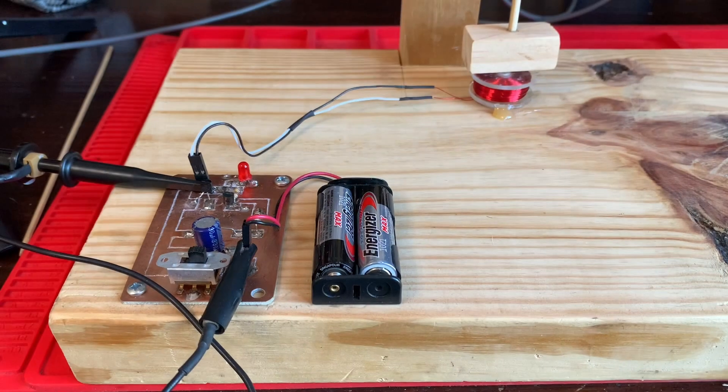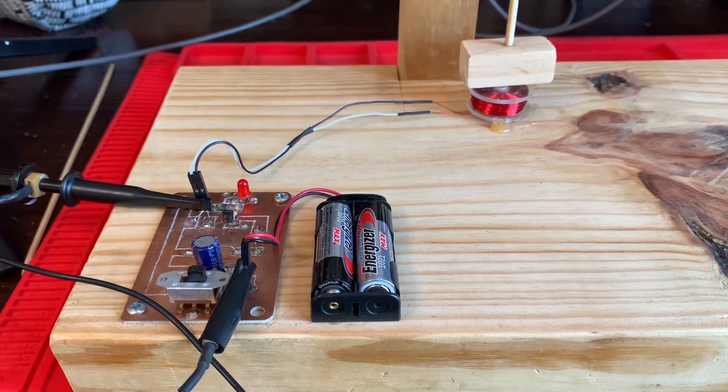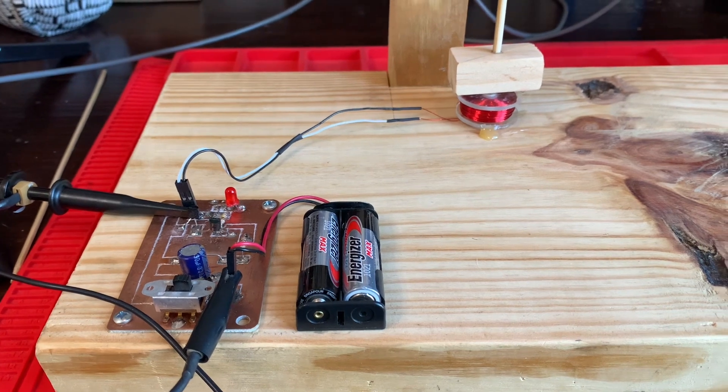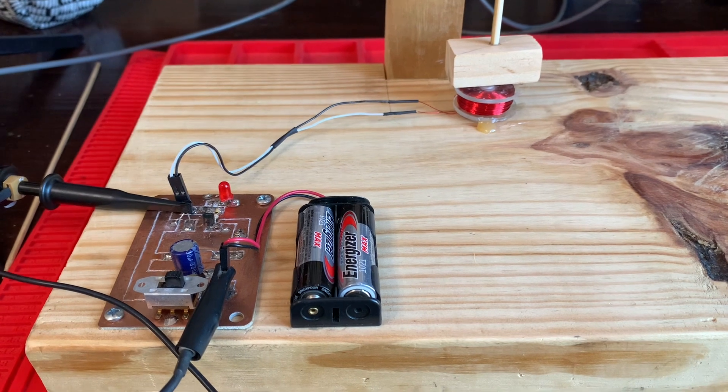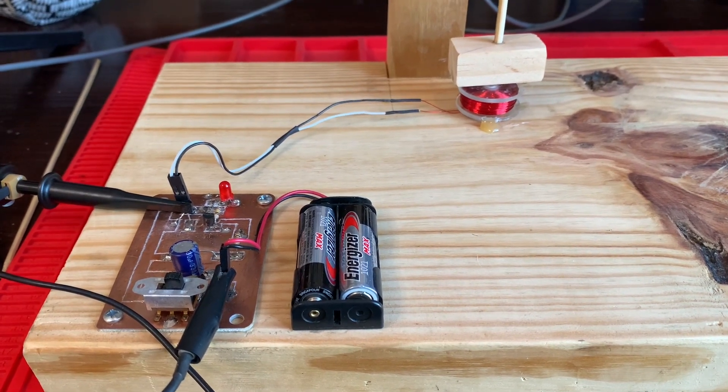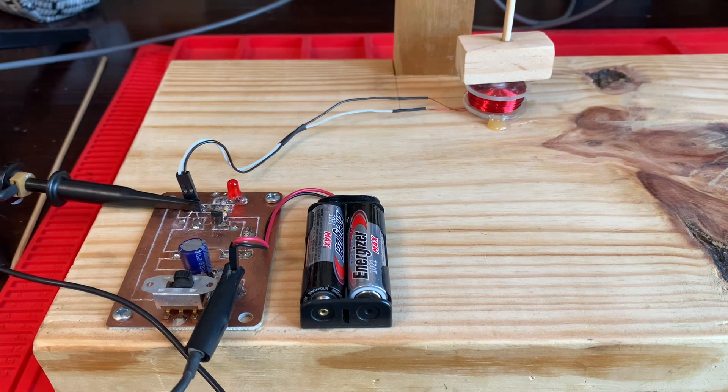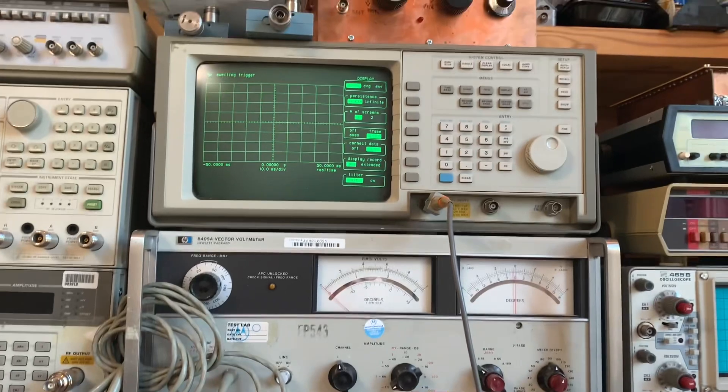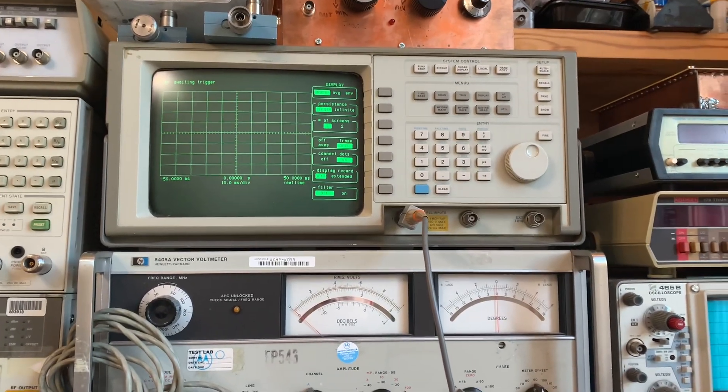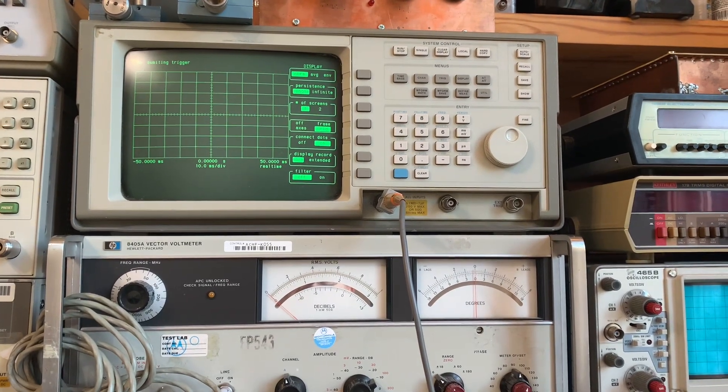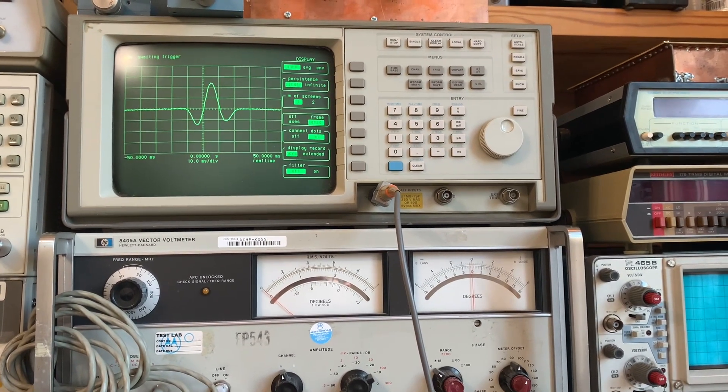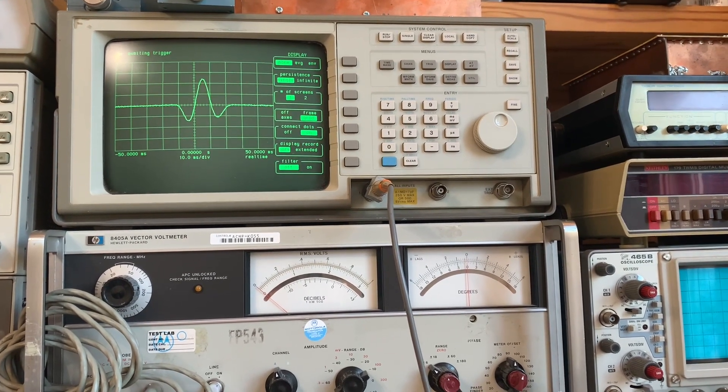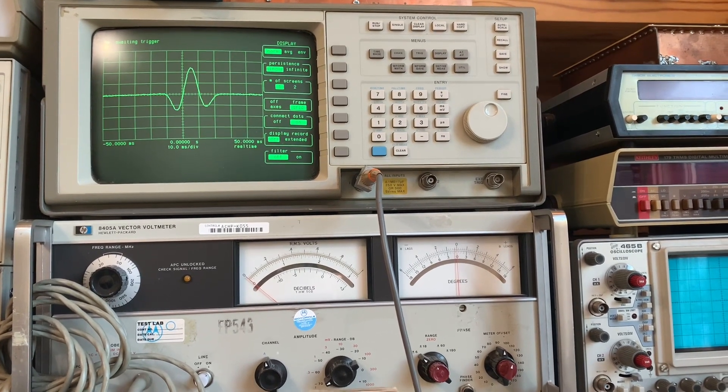We're now going to examine what the waveform looks like as the magnetic armature passes over the coil. For this demonstration, we have the power off in the circuit and a storage scope connected to the collector of Q2. If we watch the storage scope and swing the pendulum one time from right to left, we see a waveform consisting of two negative peaks and a single positive peak.